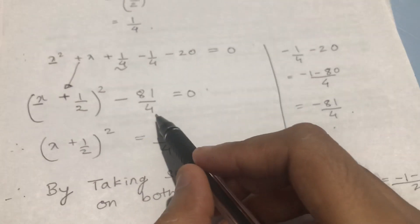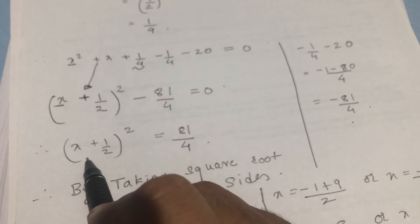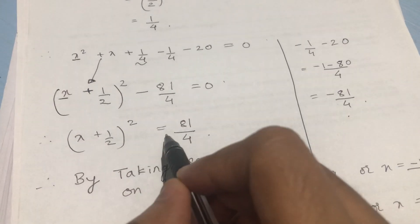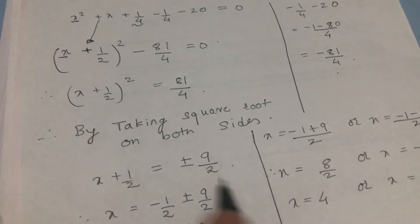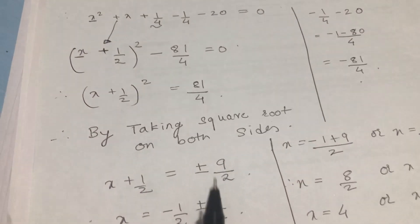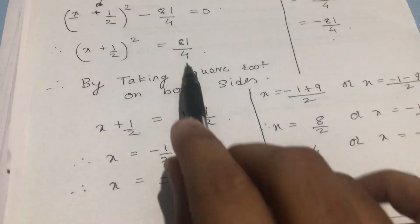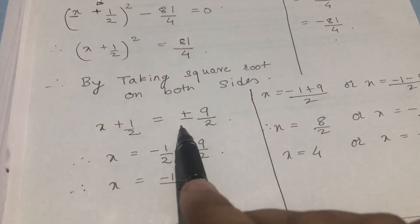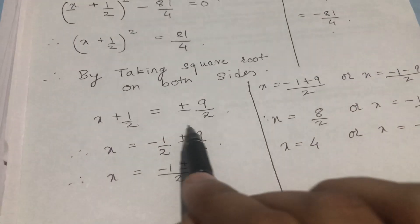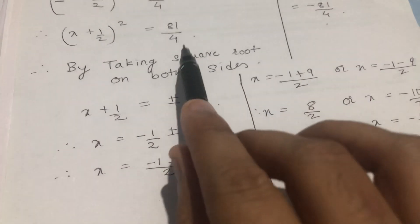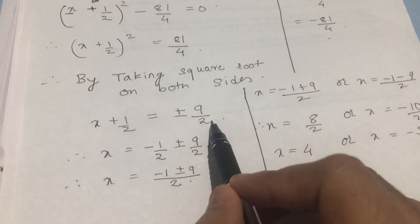So you got minus 81 upon 4. Therefore you have (x + 1/2)² = 81/4, taking the other side. Now taking square root on both sides, you get x + 1/2 = ±9/2, because plus 9 squared is 81 and minus 9 squared is also 81, similarly with the 4.